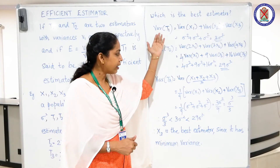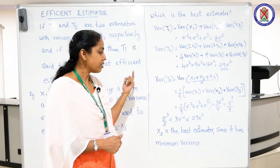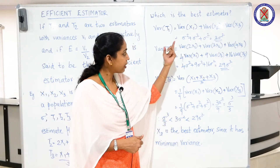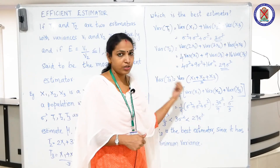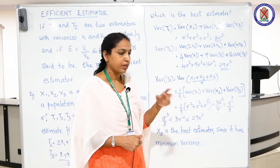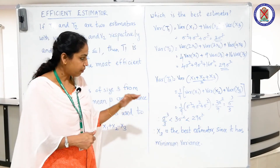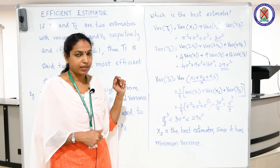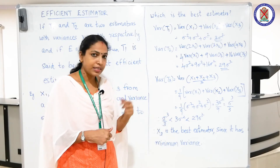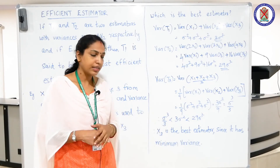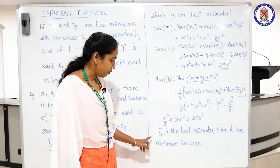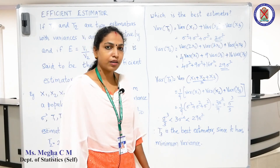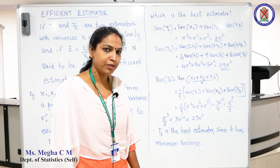Now we compare the variances of the three estimators: Var(t3) = sigma squared/3 < Var(t1) = 3 sigma squared < Var(t2) = 29 sigma squared. We want the estimator with minimum variance, and that is t3. Therefore, t3 is the best estimator since it has the minimum variance. We conclude our session here. Thank you so much.